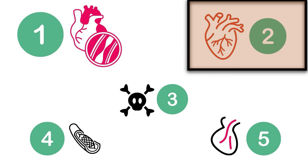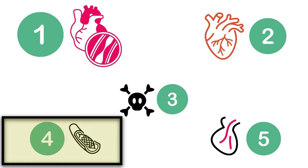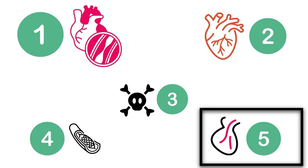Type 2 MI is myocardial necrosis where a condition other than coronary plaque instability causes an imbalance between myocardial oxygen supply and demand — due to hypotension, hypertension, tachyarrhythmia, bradyarrhythmia, anemia, hypoxemia, coronary spasm, spontaneous coronary dissection, or coronary microvascular disease. Type 3 MI results in cardiac death with symptoms suggestive of MI, detected only at biopsy. Type 4 MI is caused by percutaneous coronary intervention, and Type 5 MI is caused by coronary artery bypass graft.